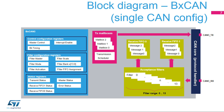The BX CAN provides 14 scalable and configurable identifier filters for selecting the incoming messages the application needs and discarding the others. Two receive FIFOs — FIFO 0 and FIFO 1 — are used by hardware to store incoming messages. Each FIFO can store three complete messages. The FIFOs are completely managed by hardware.